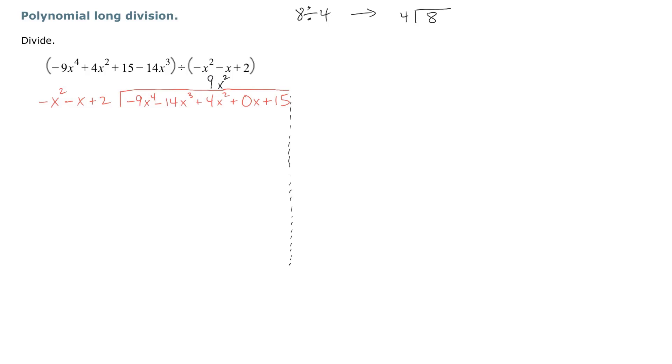We are now at the step called multiply. So when you multiply here, make sure you remember you're using the distributive property. We're going to go ahead and multiply, and we get negative 9x to the fourth minus 9x cubed plus 18x squared.